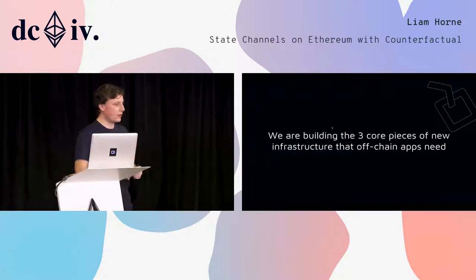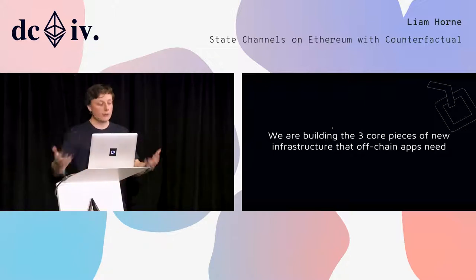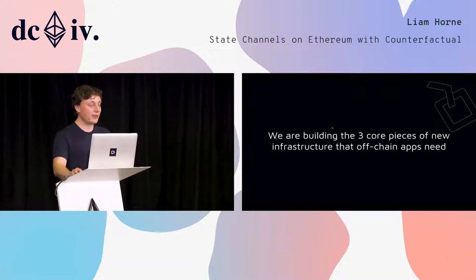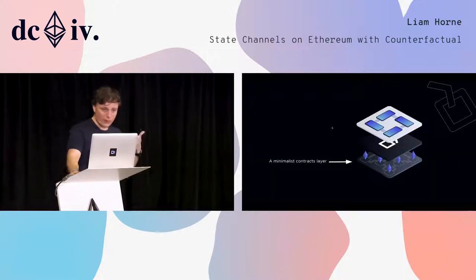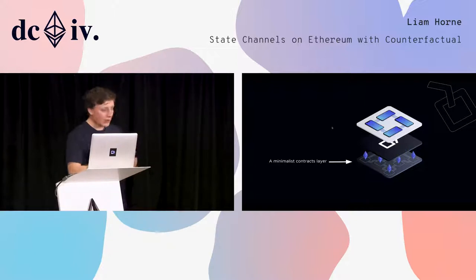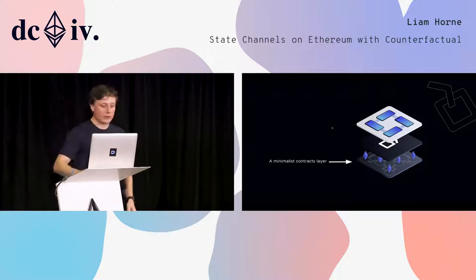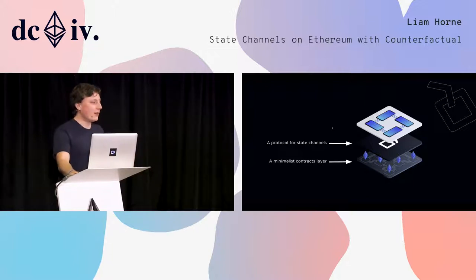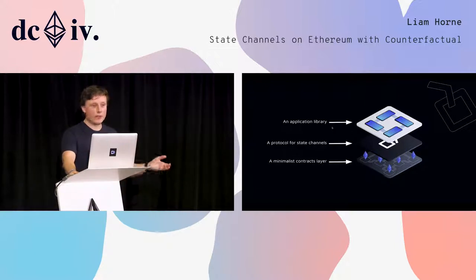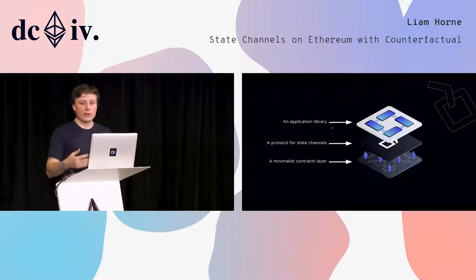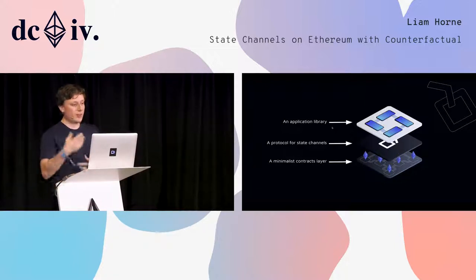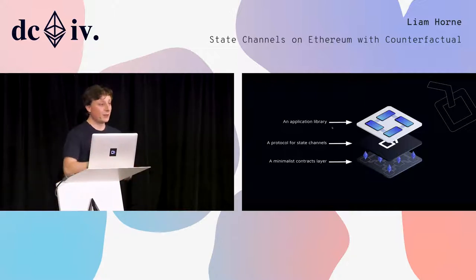Within that, there are three core pieces of infrastructure: first, a minimalist contracts layer — the most bare-bones, simple-to-read, simple-to-deploy small set of contracts on top of which you can design a protocol. Second, a protocol for state channels that defines how you install, update, and uninstall applications. Third, an application library that allows developers to interface using this protocol. This kind of looks like the web3 stack: underlying blockchain, the Ethereum protocol, and an application library like web3. We're trying to emulate a similar developer experience for layer 2.